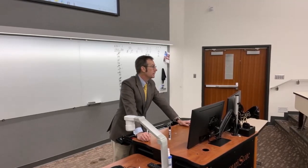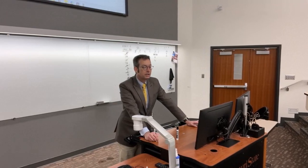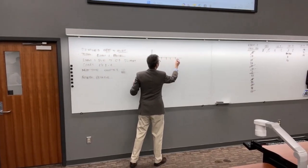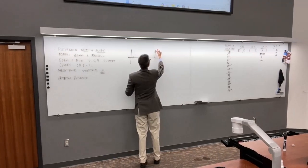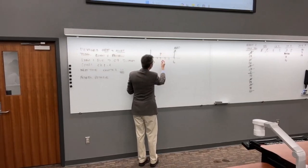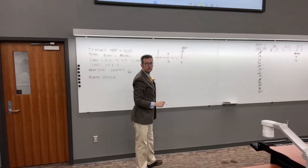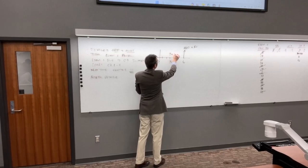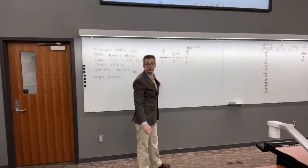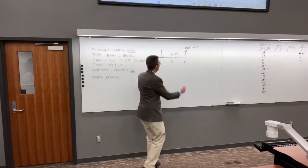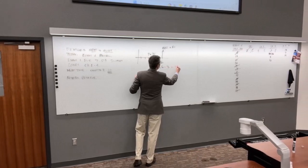Draw a timeline: years one through six, with $1,000 at year six, and we want to know its value at year three. Year six looks like a future value; year three is the present value. N equals 6 minus 3 equals 3 years, and I/Y equals 10.